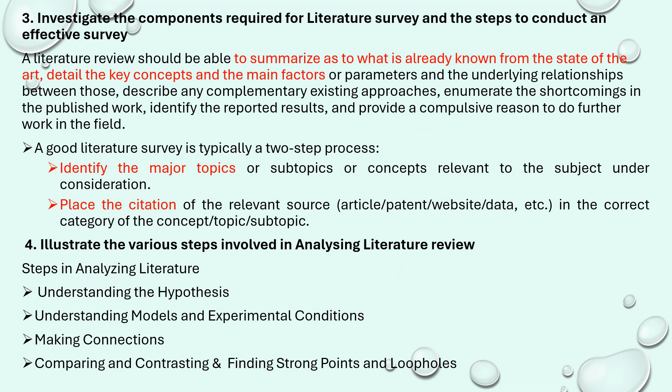Third question: investigate the components required for a literature survey and the steps to conduct an effective survey. There are components required for a literature survey. You have to summarize based on the state of the art — what kind of problem it is, whether it comes under science, technology, or arts. You have to identify the key concepts and main parameters required to develop new knowledge. Always complement the existing approaches — never say anything negative about them; instead, tell how there is improvement upon existing approaches.